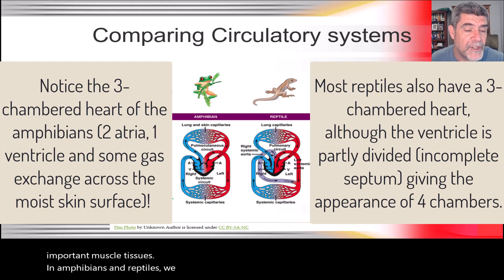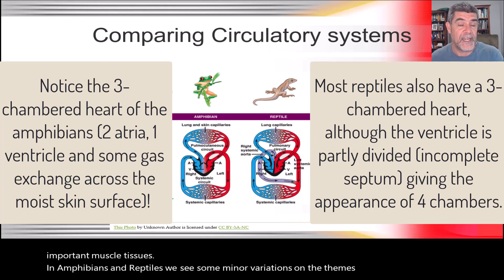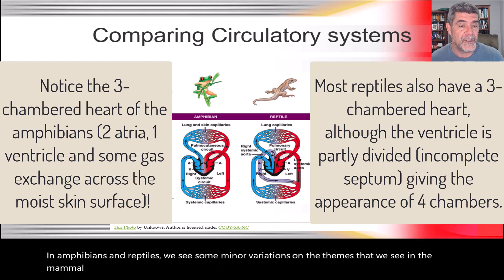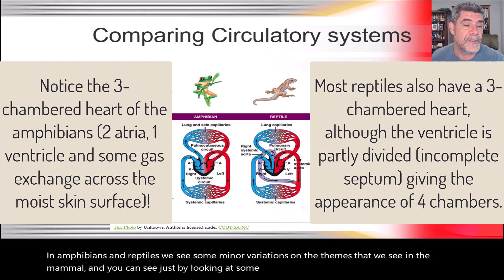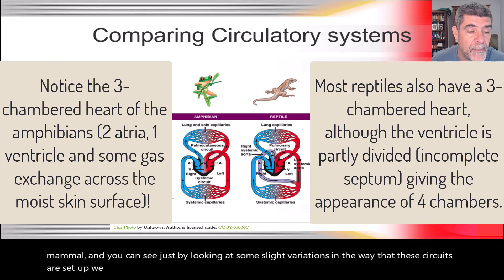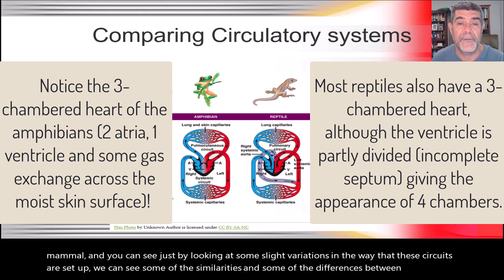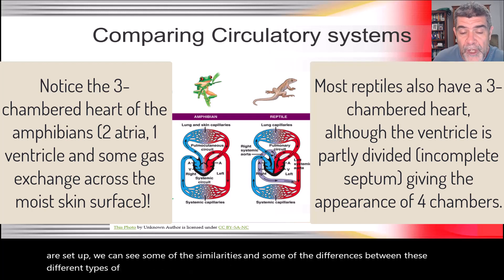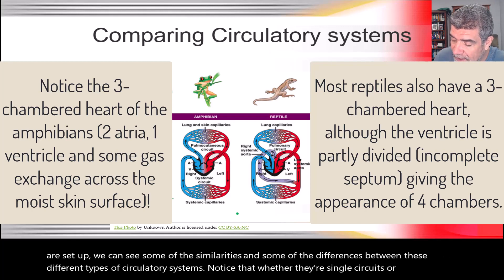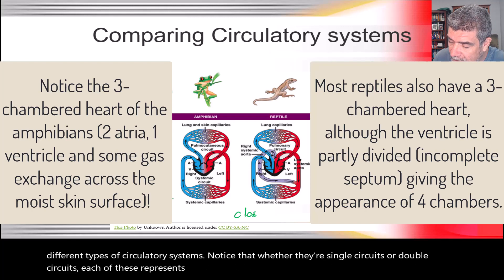In amphibians and reptiles, we see some minor variations on the themes we see in mammals. By looking at slight variations in how these circuits are set up, we can see similarities and differences between these different types of circulatory systems. Whether they're single circuits or double circuits, each of these represents a closed system.